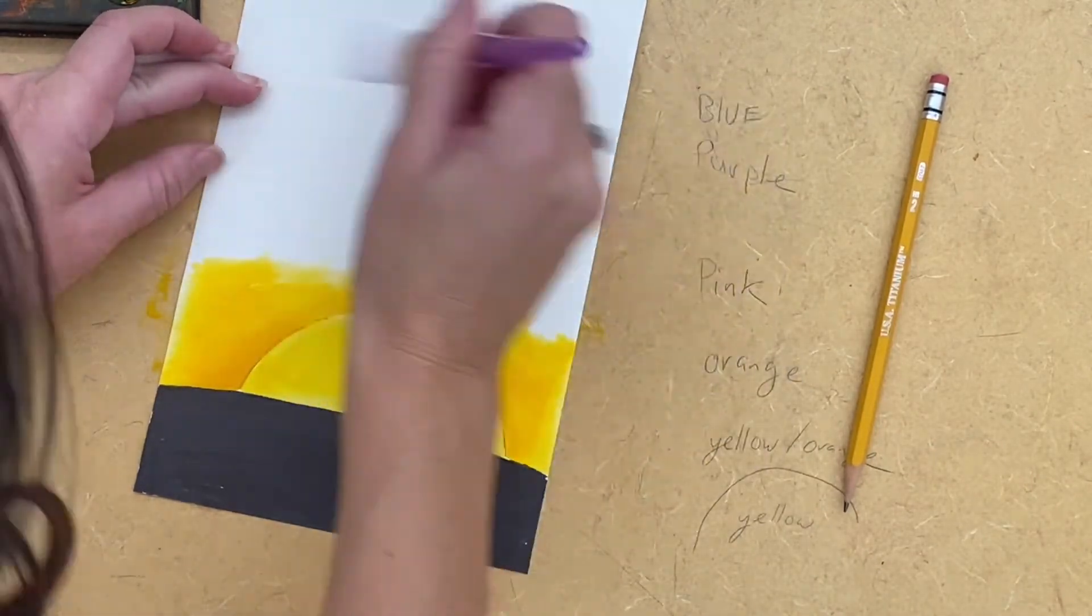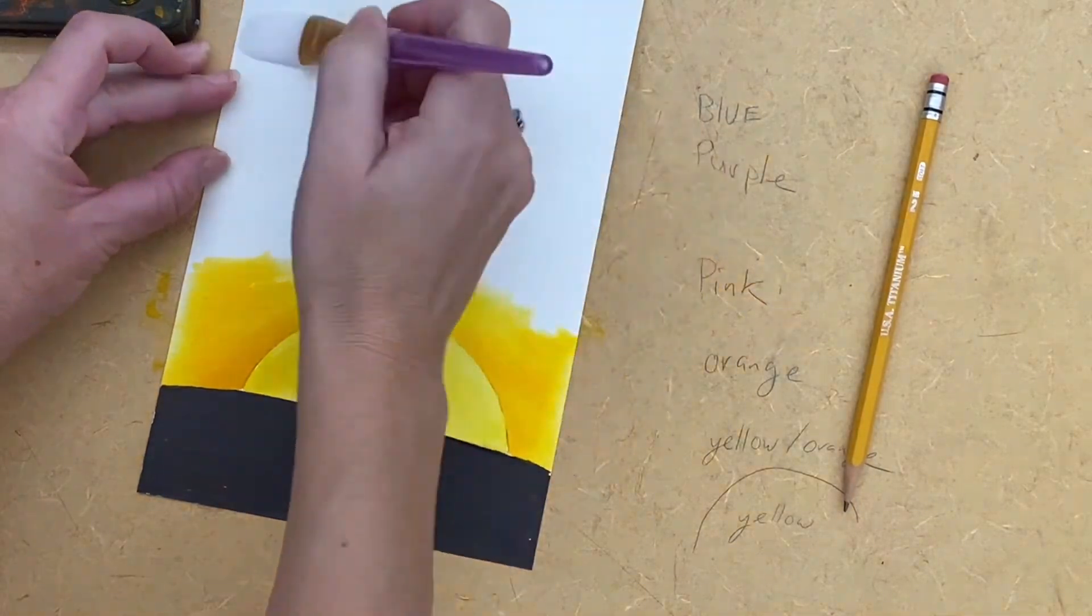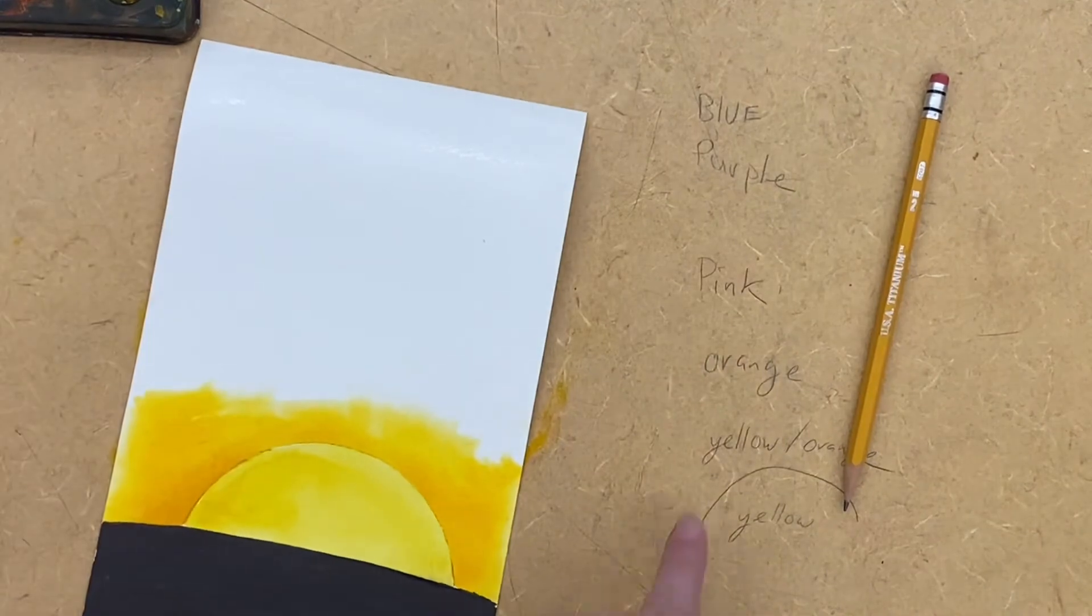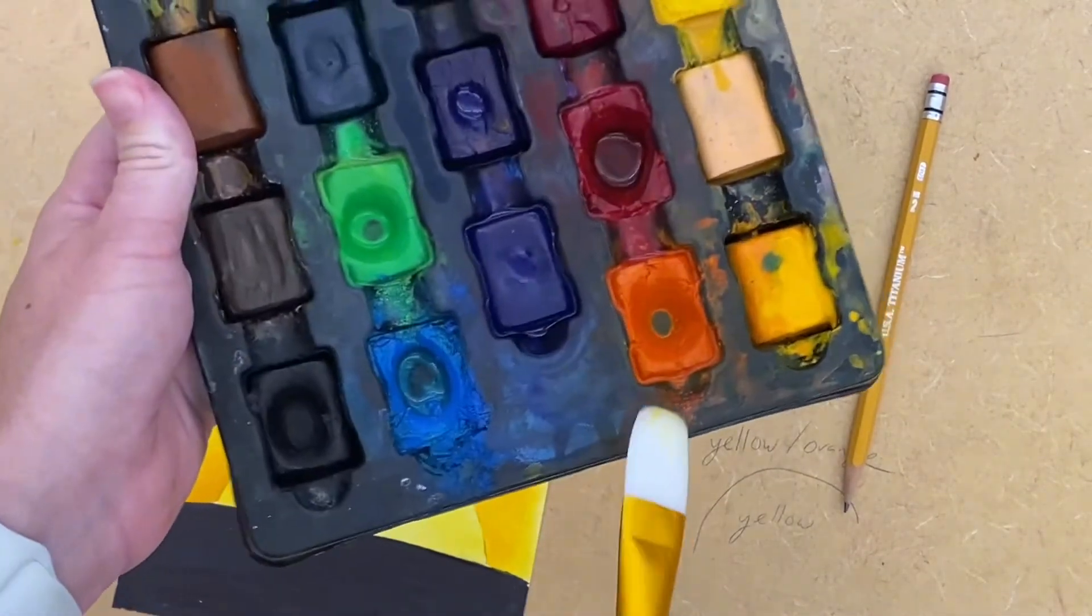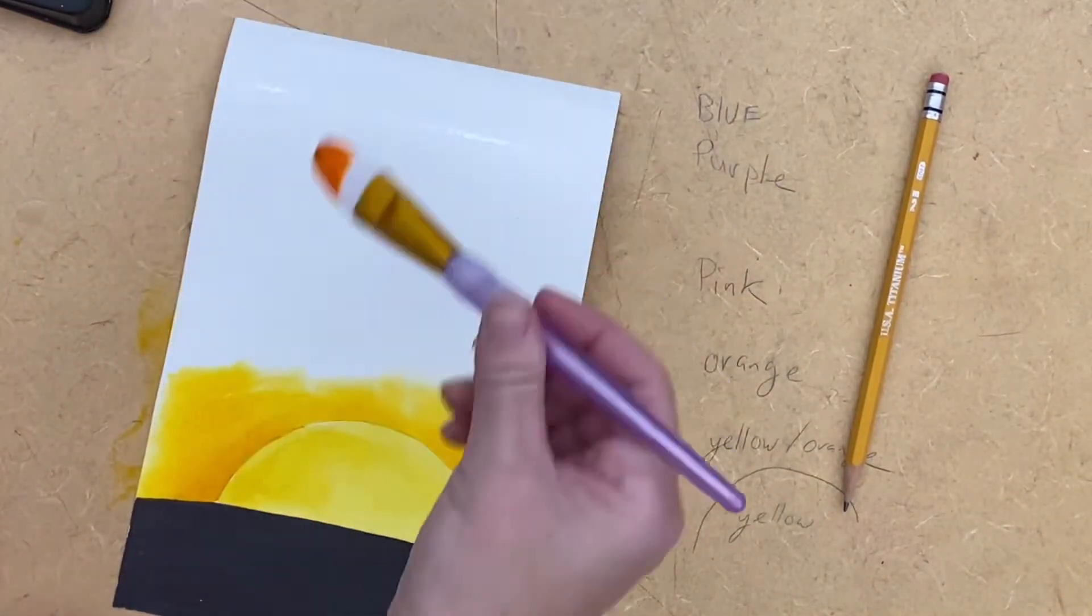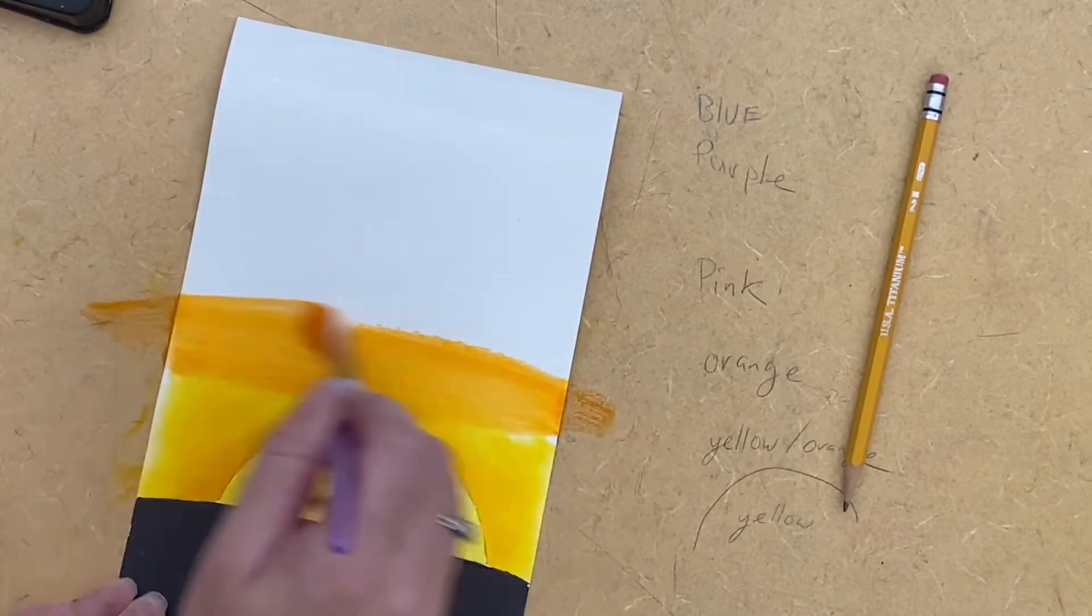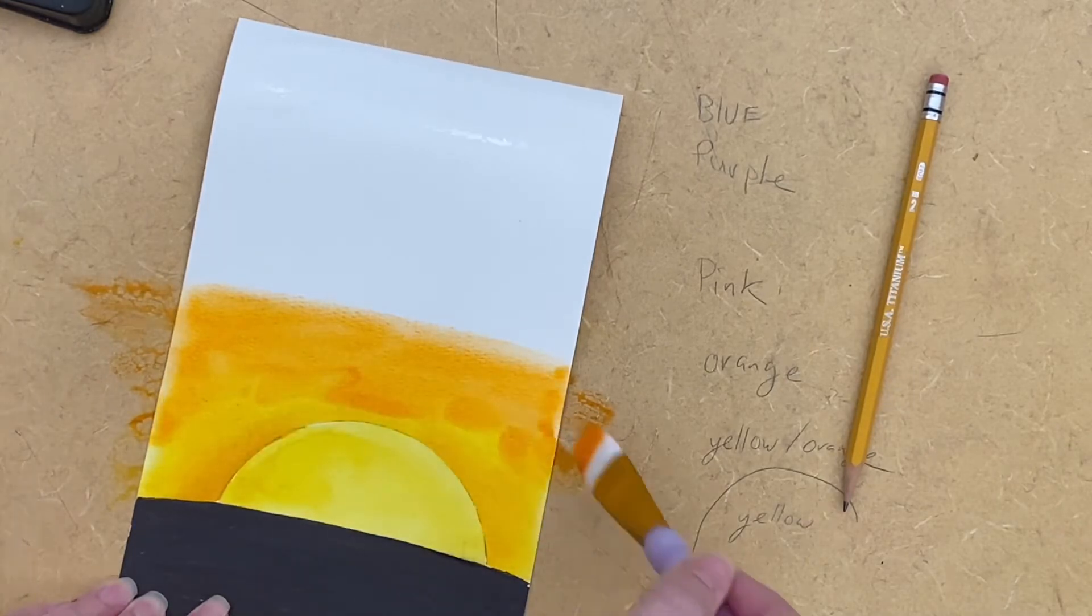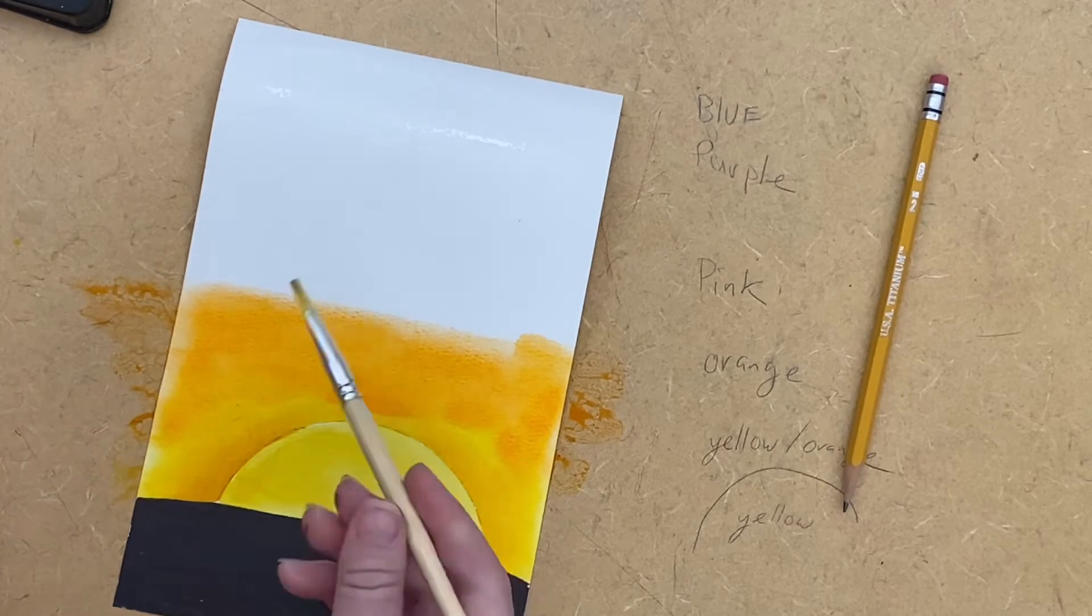Remember, you want to keep everything wet on your paper so it blends. Okay, so from yellow-orange, I need the regular orange. So that's going to be this color. Remember, each time you change colors, you're going to want to rinse your brush off really good. I'm going to blend it. I'm going to take my little brush to help blend.